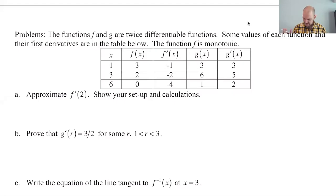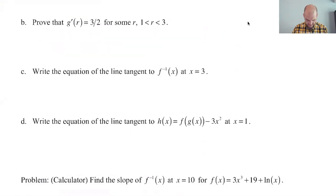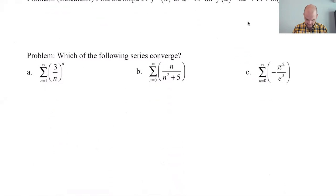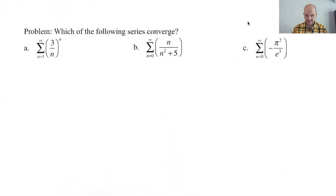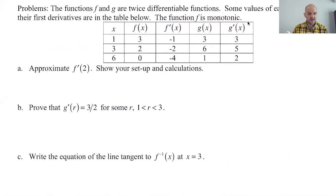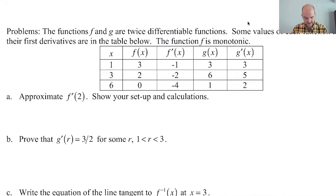We're back. We're on page five of Notes 15, and this is review — all of this could be on the AP exam if you're in any AP calculus class. The questions at the bottom are definitely BC, but the table stuff is definitely Calc AB material. Make sure you know how to do it.